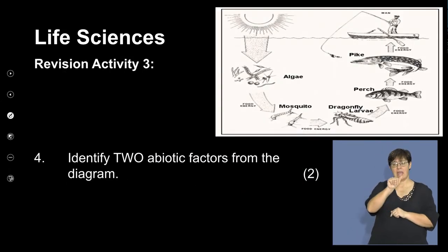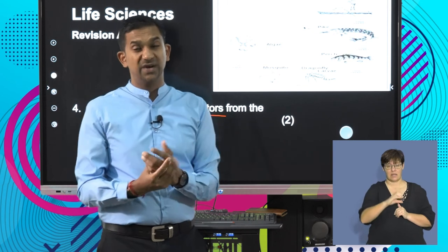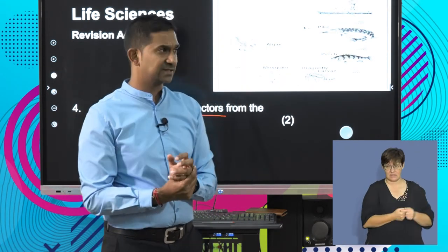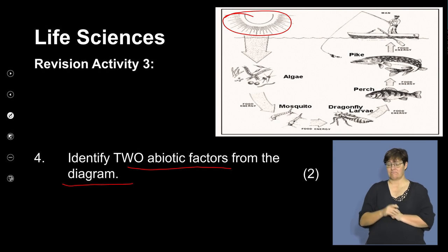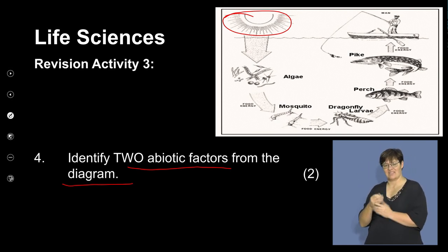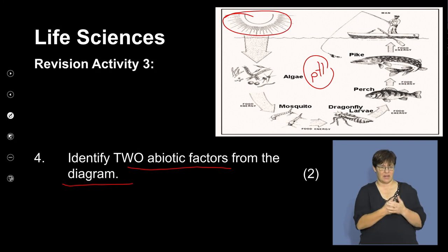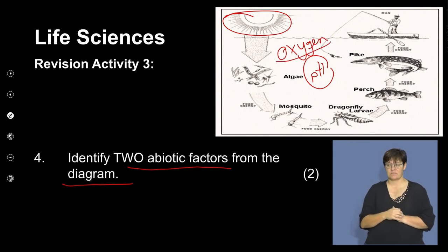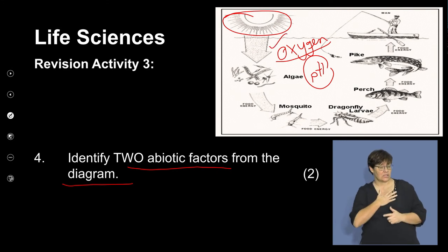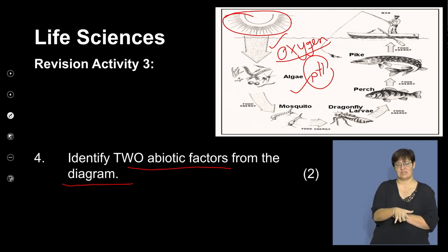Identify two abiotic factors from the diagram. In an aquatic environment, sunlight is a factor that affects living organisms — so the first factor is sunlight. Because we are in an aquatic environment, the pH of the water is another factor that can influence survival. The amount of dissolved oxygen in the water is also an abiotic factor. So: sunlight, dissolved oxygen in the water, and pH of the water are all abiotic factors that can influence these organisms' survival.